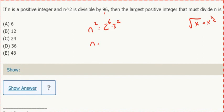So now that's n squared. I take the square root because I want to get n. That's 2 to the 3rd, 3, which is 24.